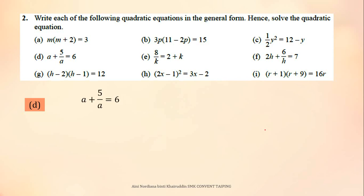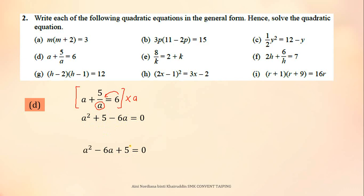For question D, have a look at the denominator. Multiply the whole equation by A. So A over A times A is A squared; 5 over A times A is 5; then bring 6 to the left side, giving minus 6A. This is not yet in general form, so rearrange the equation into general form, then factorize to get the values of A: 5 and 1.